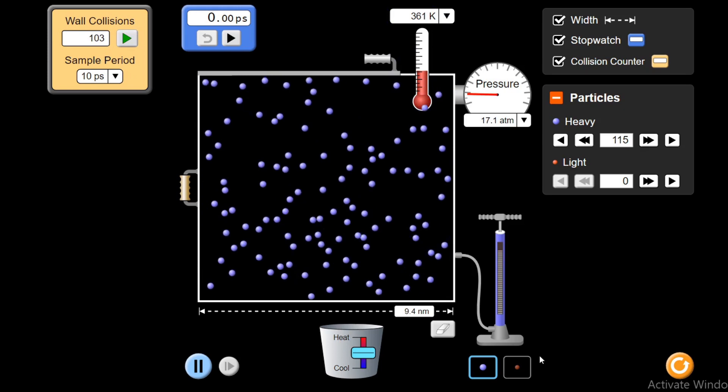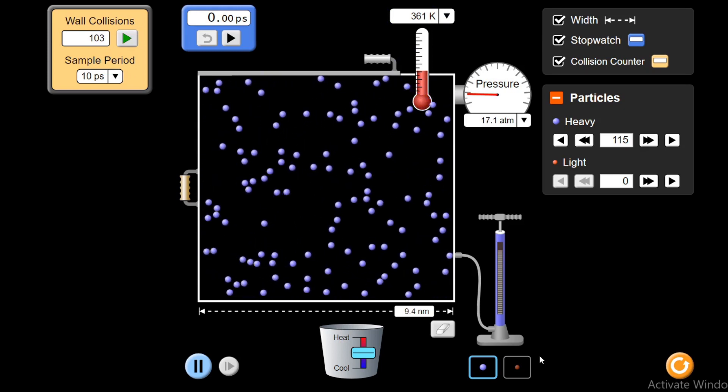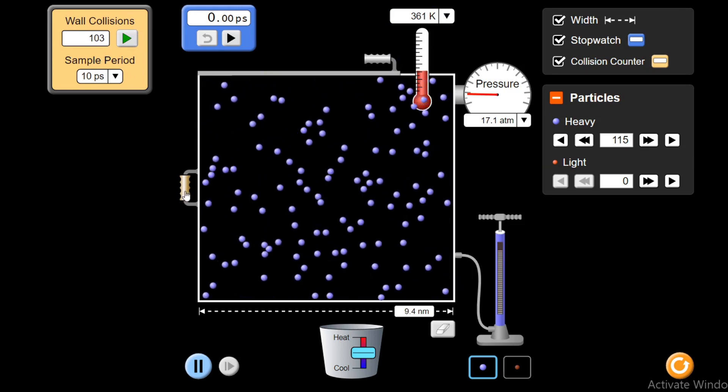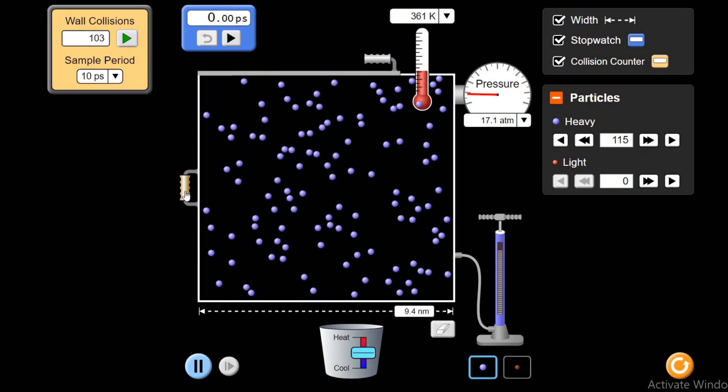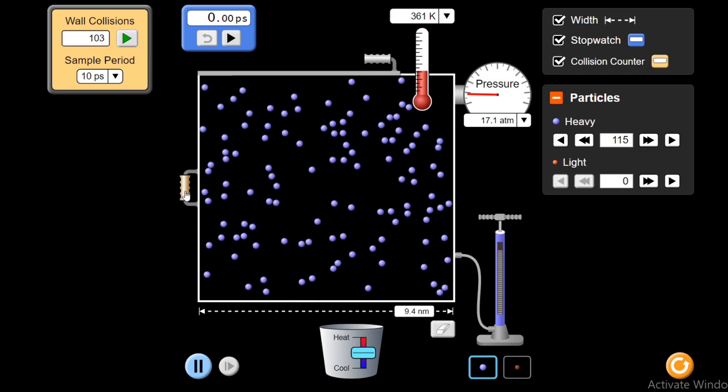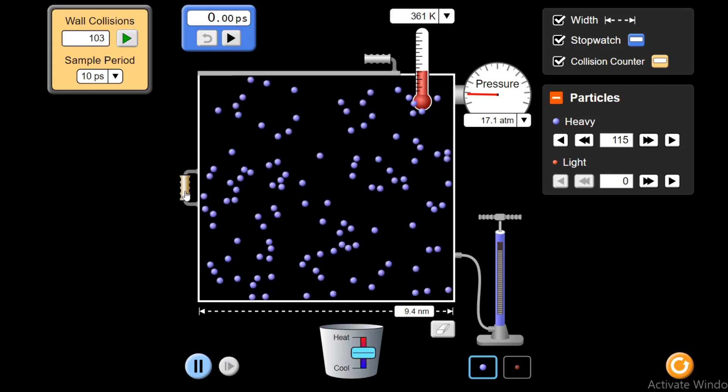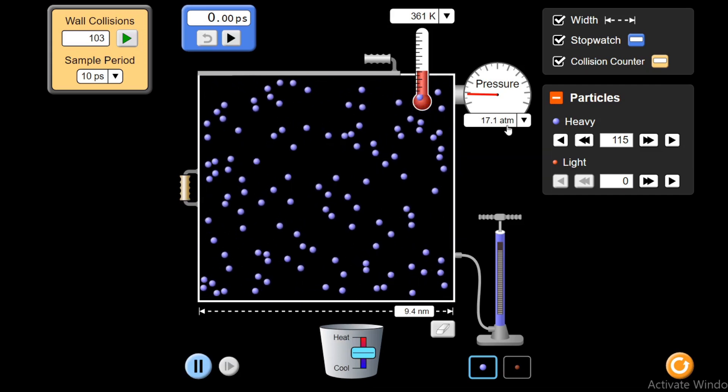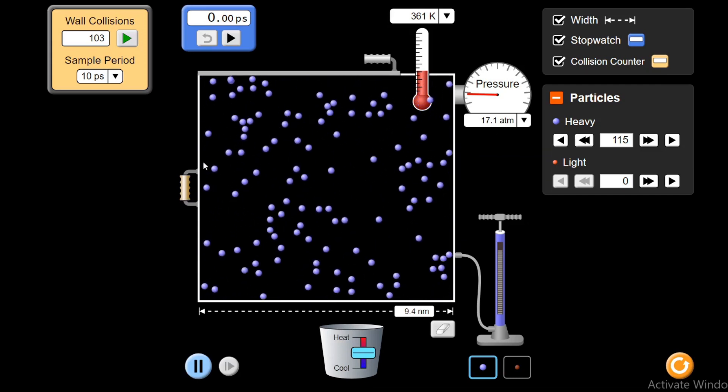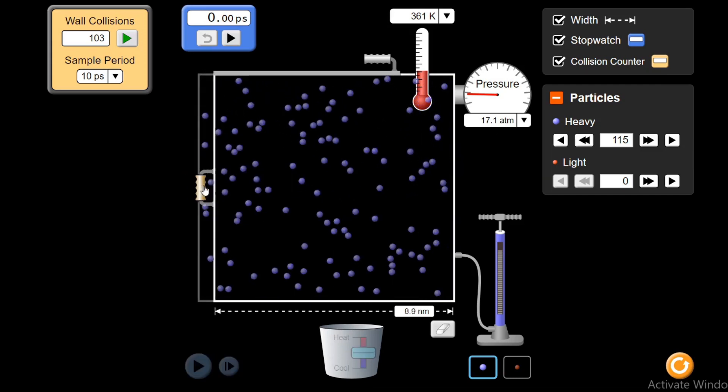These were two methods by which we can control the pressure. The third way to control the pressure would be by changing the volume. If I decrease the volume, then the pressure must increase. Let's decrease the volume. It is 17.1 atmospheric pressure. And if I decrease the volume to this much, volume has decreased and pressure has increased because the area has decreased.